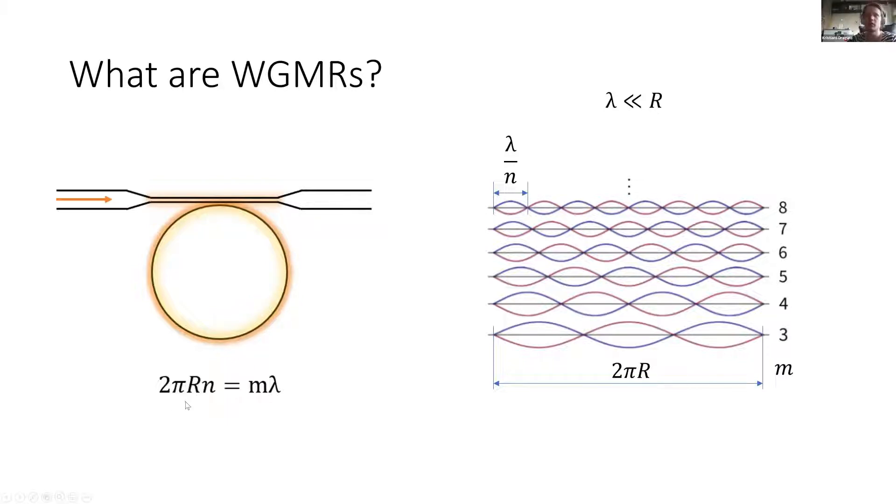A nice way to explain this formula is drawn here. This is the perimeter of the resonator. When an integer number of waves fit inside the perimeter, then we have this resonance. We need to divide the wavelength by the refractive index because it's inside the medium.